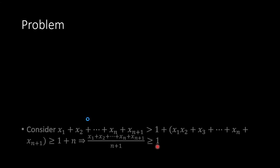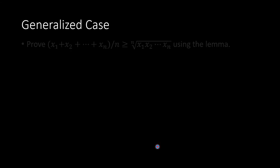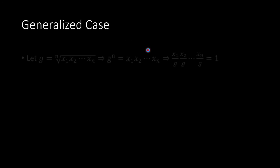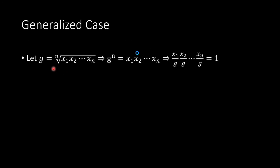Now for the general case: we want to prove (x1 + x2 + ... + xn) / n ≥ n-th root of (x1·x2·...·xn) using this lemma. Let the geometric mean g equal the n-th root of x1·x2·...·xn, so g^n = x1·x2·...·xn. Dividing each xi by g, we get (x1/g)·(x2/g)·...·(xn/g) = 1.